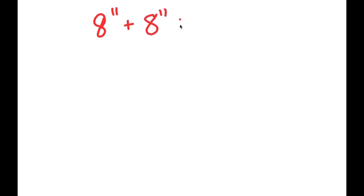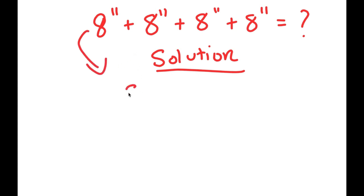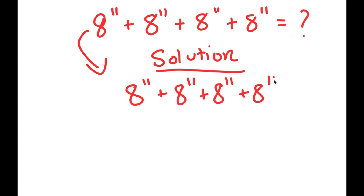In this problem, I have 8 to the power of 11 plus 8 to the power of 11 plus 8 to the power of 11 plus 8 to the power of 11. I'm going to find the value of this. For my solution, I'm going to rewrite my problem over here: 8 to the power of 11 plus 8 to the power of 11 plus 8 to the power of 11 plus 8 to the power of 11.